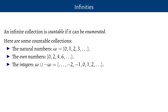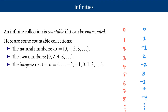If I make my collection bigger and include the negative as well as the positive numbers, I can't use the usual order from smaller to bigger to enumerate them because there's no smallest negative number. Instead I alternate between positive and negative numbers — positive numbers on the odd stages, negative numbers on the even stages. The result is an enumeration of all of the positive and negative numbers, sort of starting from the middle and working out.